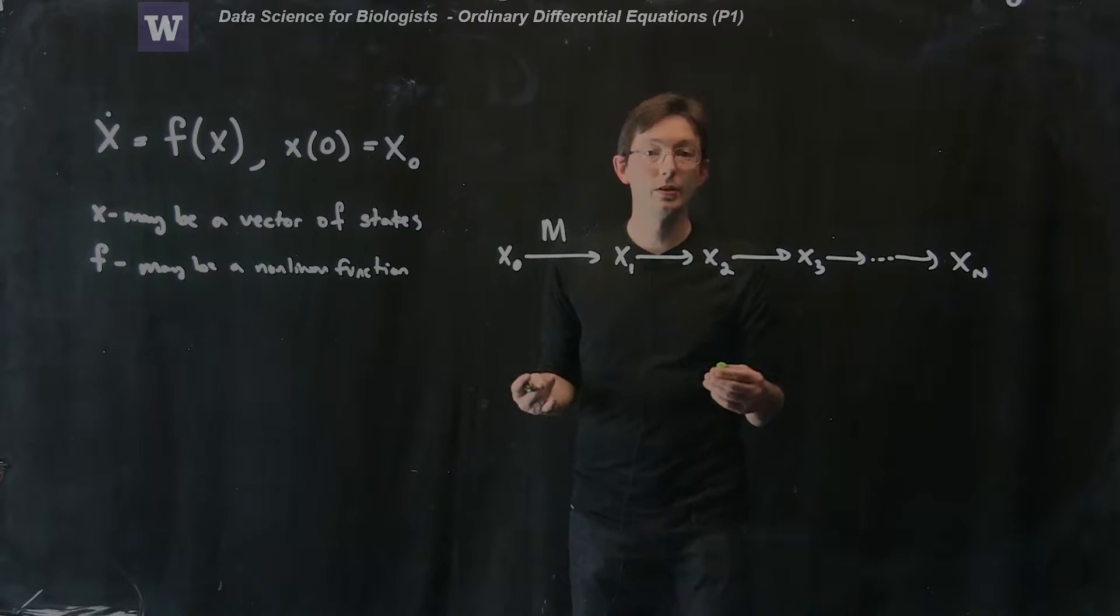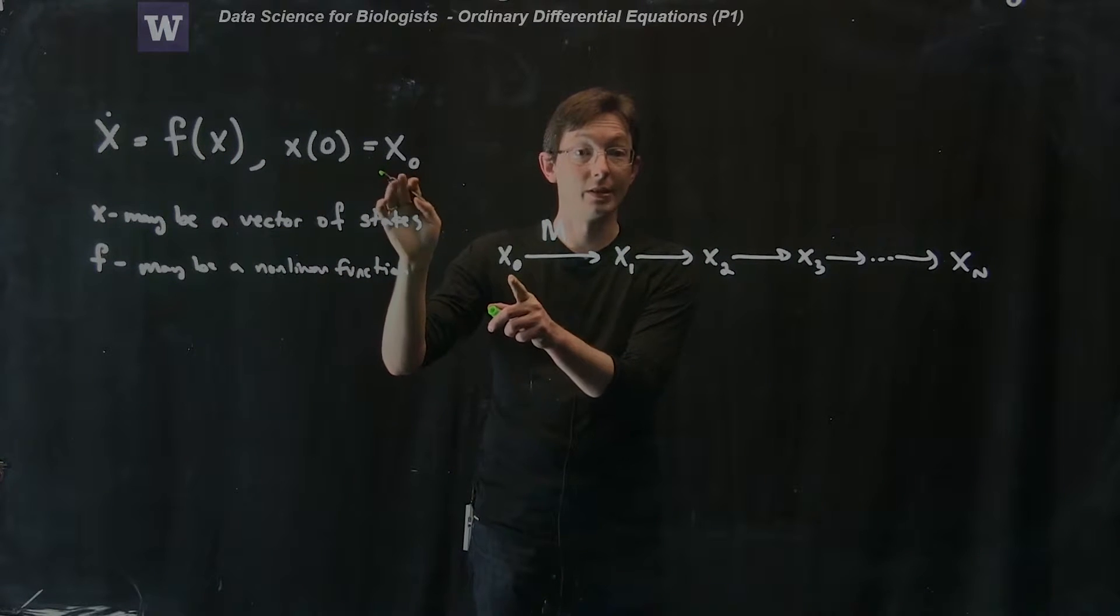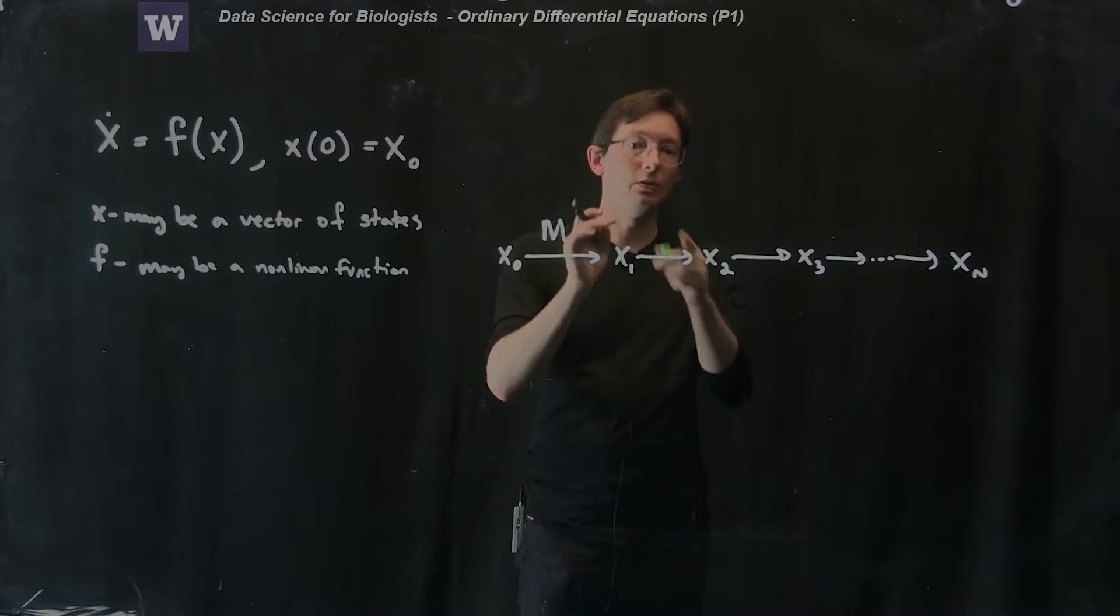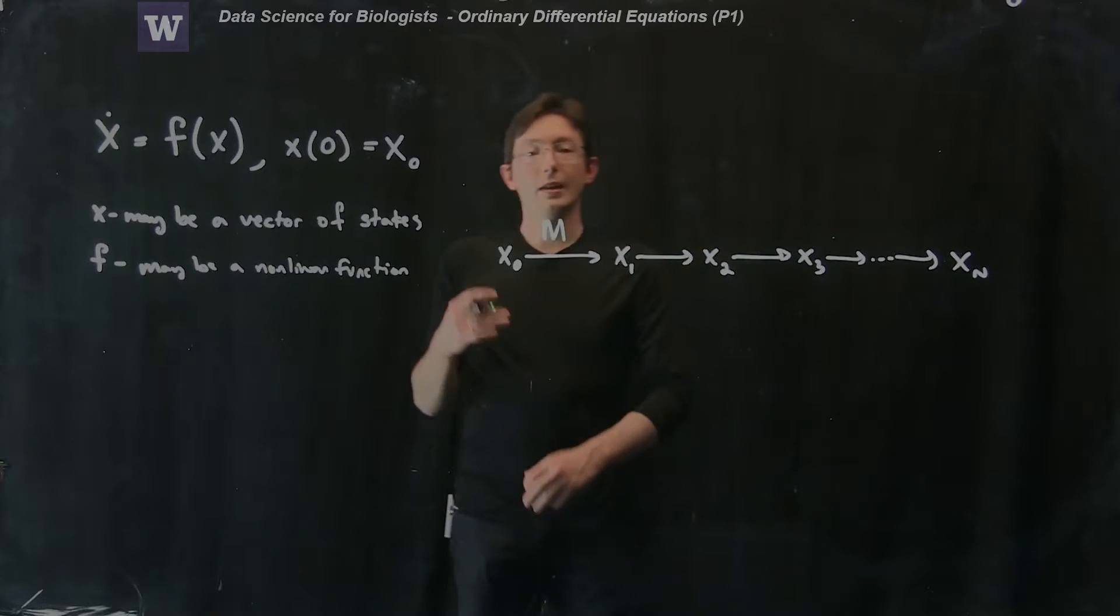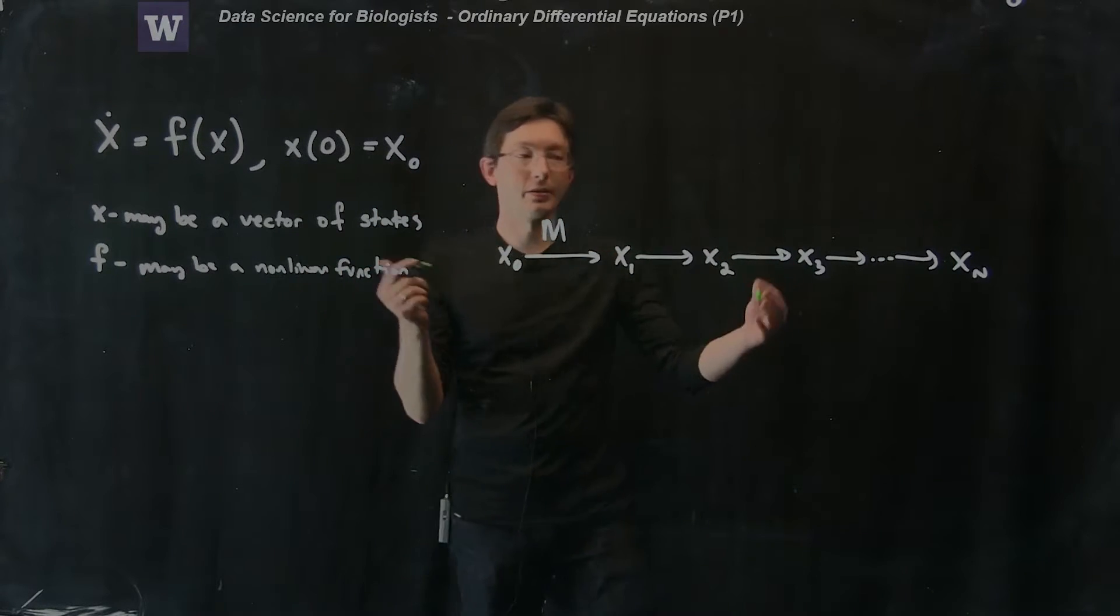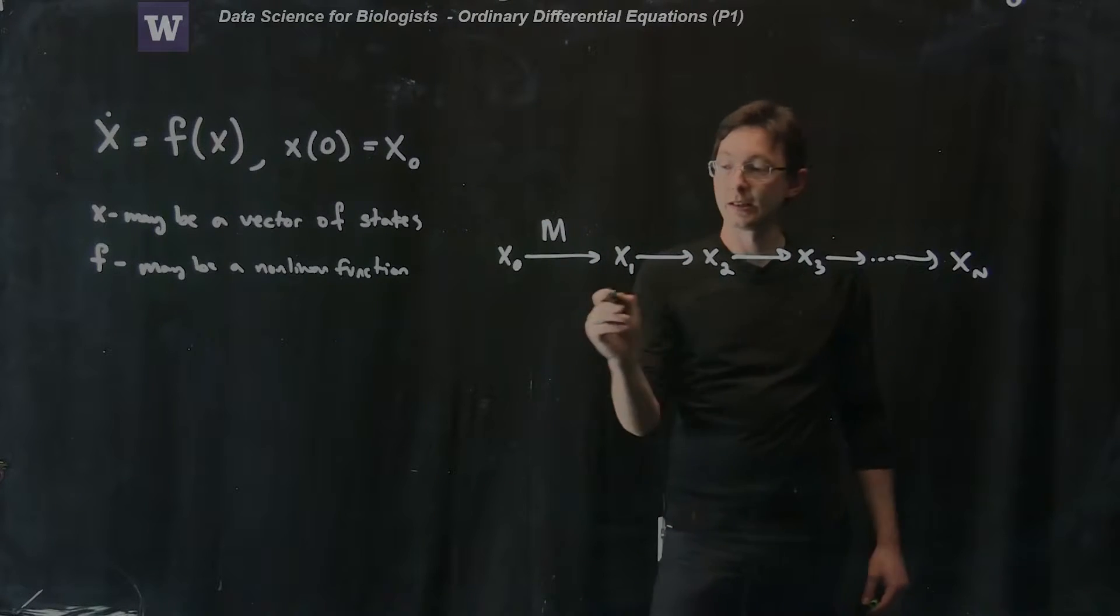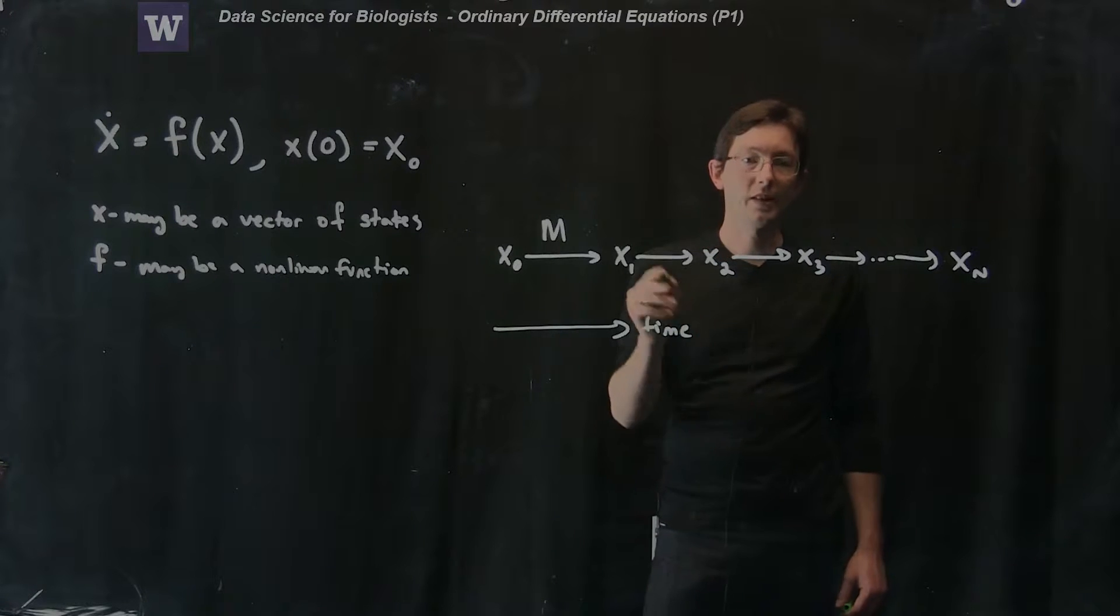So what we would like to be able to do is if we know our state at time 0, at time naught, we'd like to be able to step it forward and get our system at time 1, time 2, and keep stepping them forward and forward and forward in time and build up what's called a trajectory. So this sequence of states is called a trajectory in time, this is the time direction and this is a trajectory.